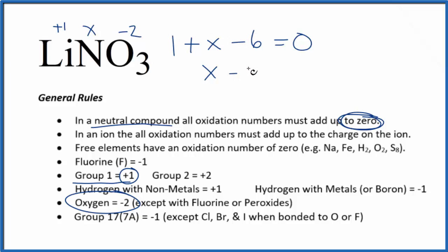So X minus five equals zero, X will equal a positive five. So for the nitrogen in this LiNO3, that'll have an oxidation number of plus five.